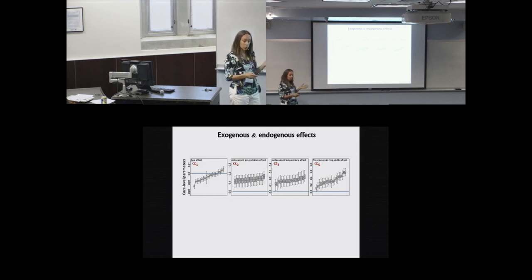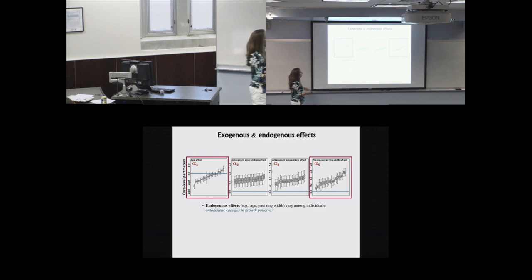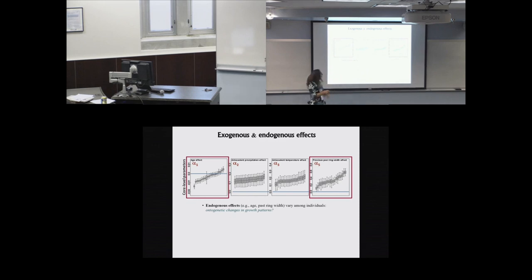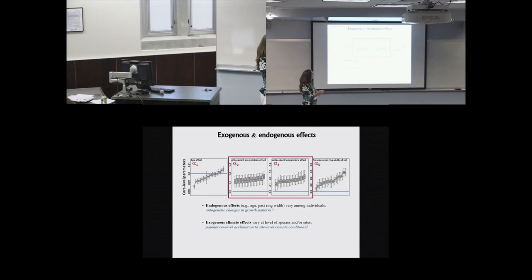Looking at the regression coefficients — age, antecedent precipitation, antecedent temperature, and previous year ring width — there are endogenous effects relating tree properties to growth that differ among individual cores, potentially reflecting ontogenetic growth patterns. But the exogenous climate effects are all significantly different from zero and don't differ among individuals, suggesting these climate effects reveal population-level acclimation to site-level conditions that is consistent across all individuals.